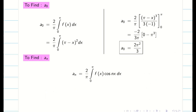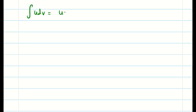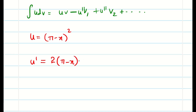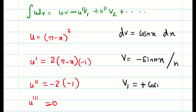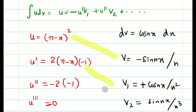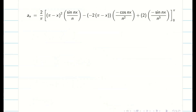Next, aₙ. My f(x) is (π minus x)² times cos(nx). We use Bernoulli's integration formula: integral u dv = uv minus u'v₁ plus u''v₂ etc. My u is (π minus x)². u' = 2(π minus x)(minus 1). u'' = minus 2. u''' = 0. On the other side, dv = cos(nx) dx, v = sin(nx)/n, v₁ = cos(nx)/n², v₂ = sin(nx)/n³. Mapping uv, u'v₁, u''v₂, all remaining terms get 0. Rewriting and substituting into aₙ.